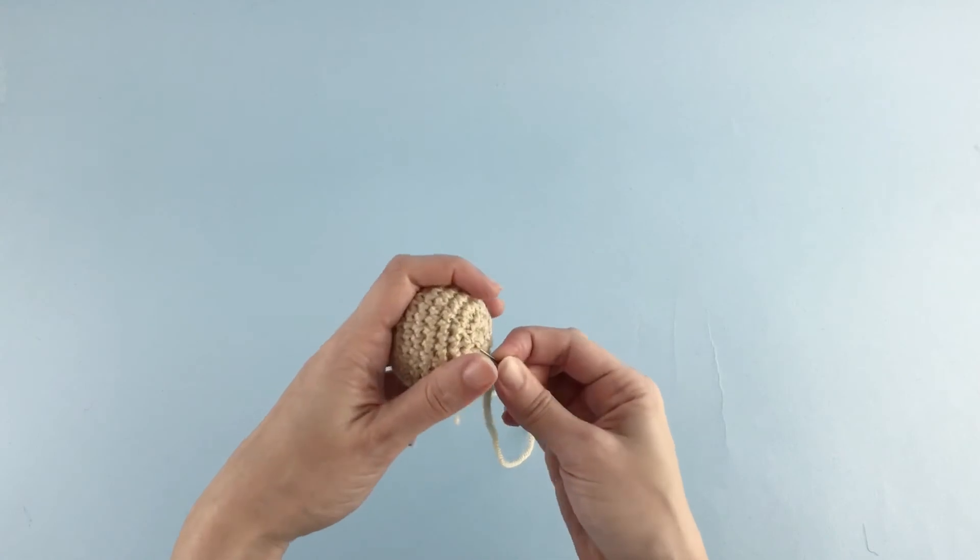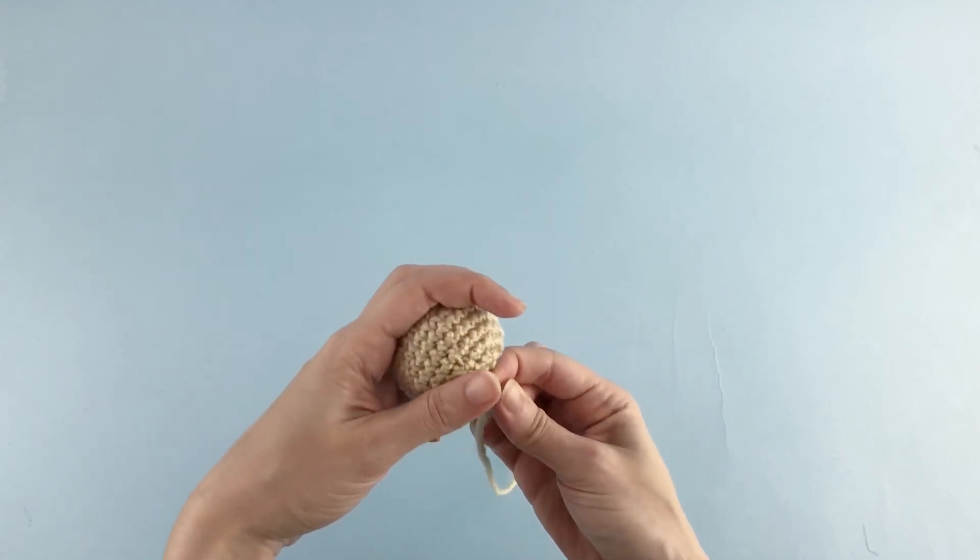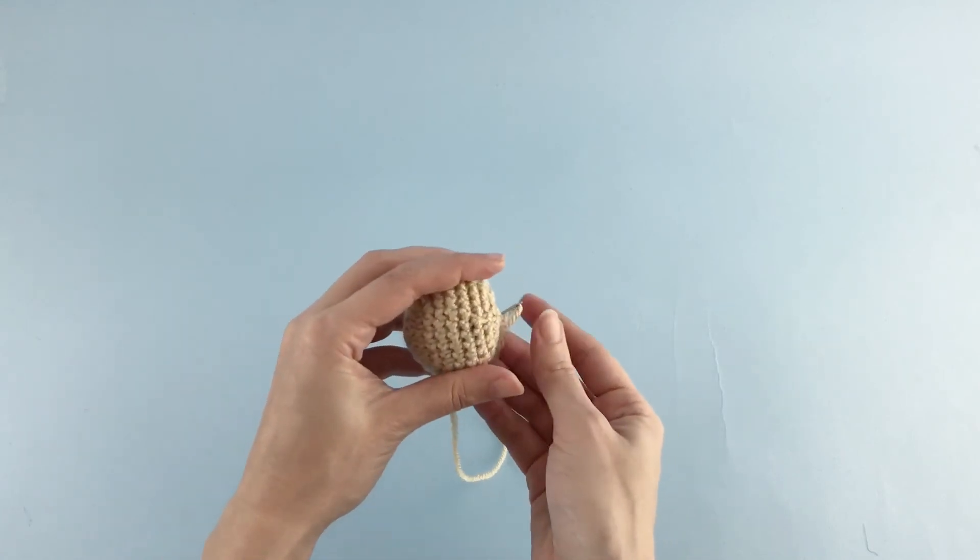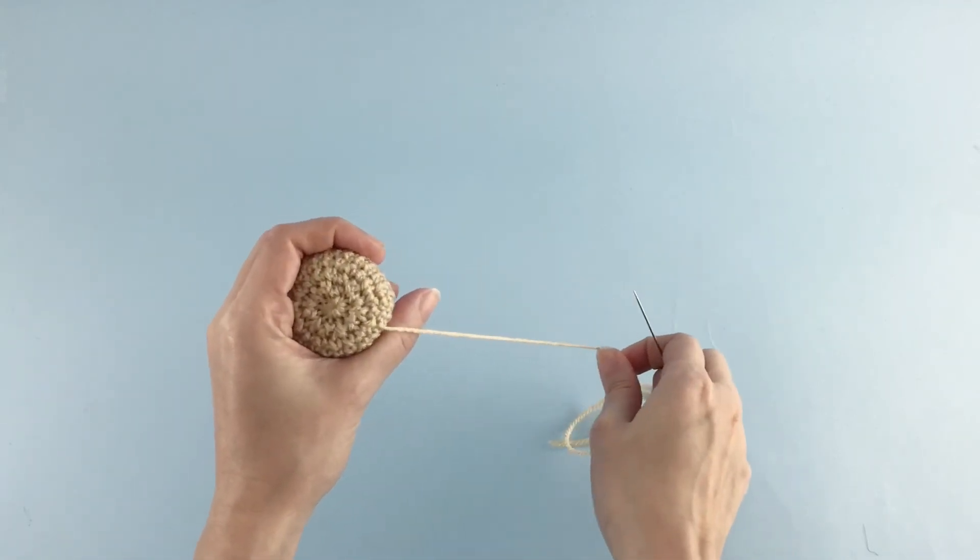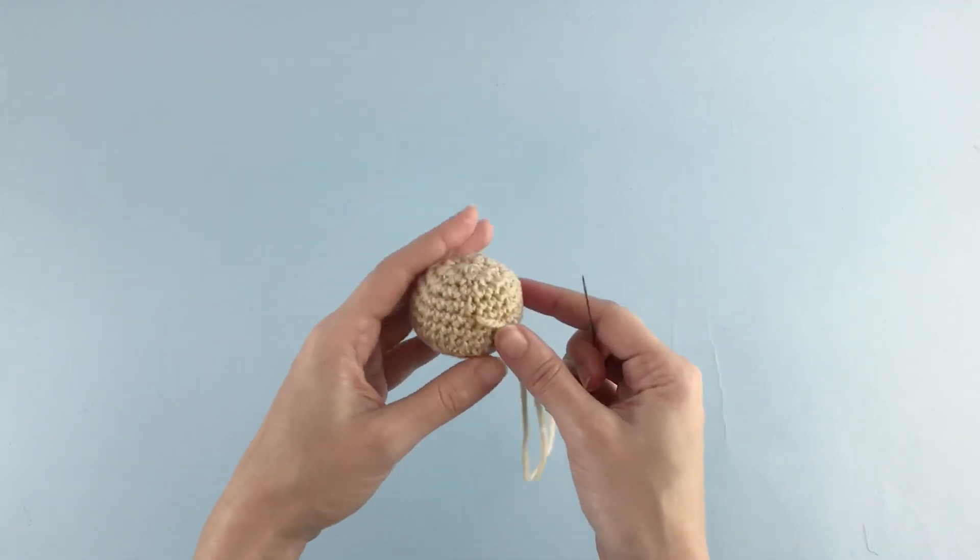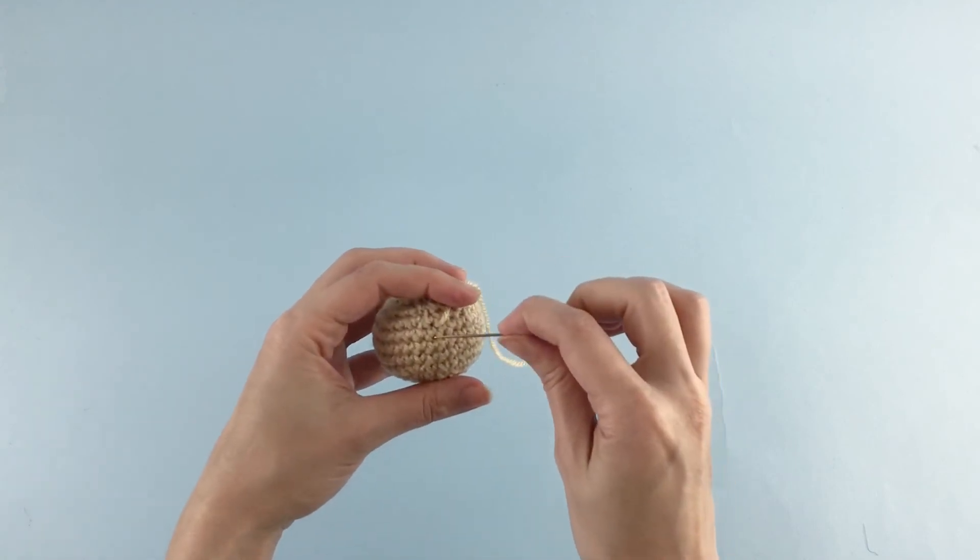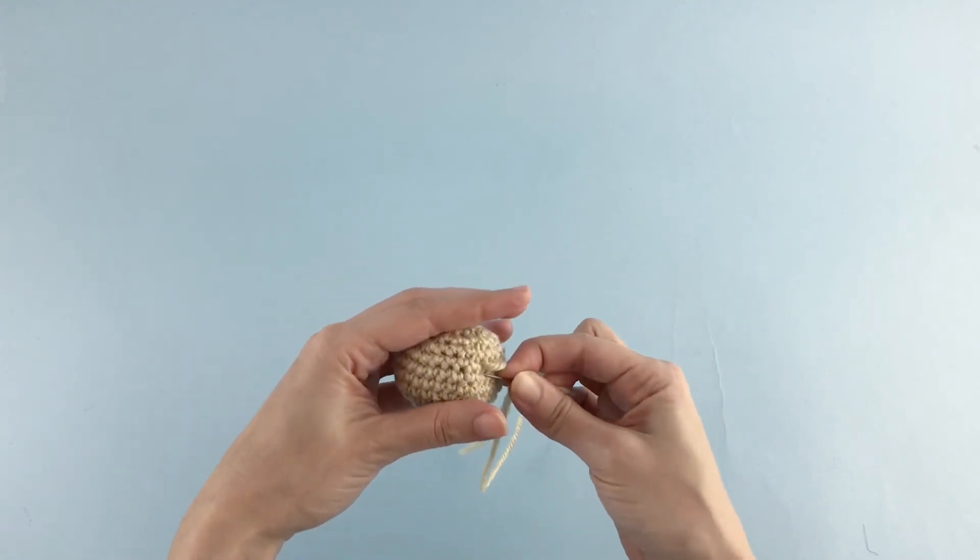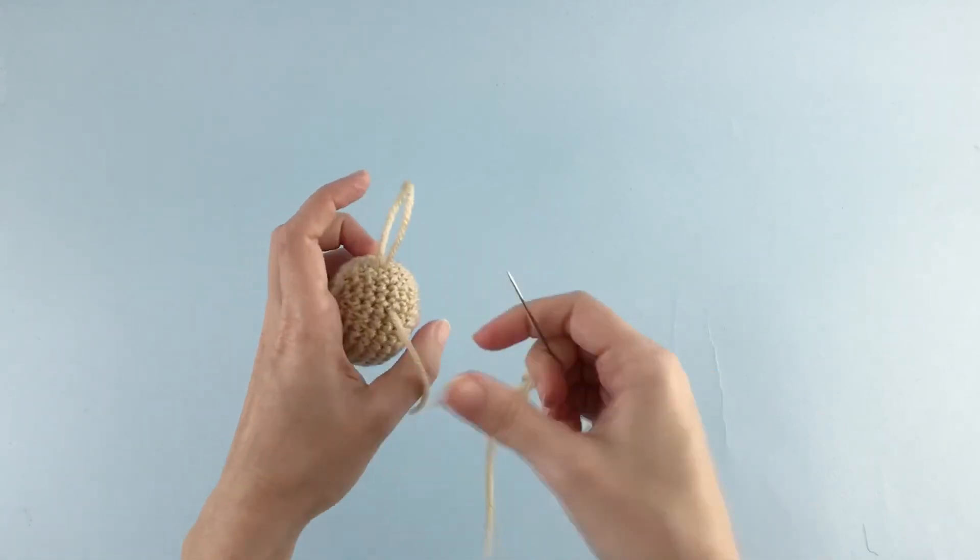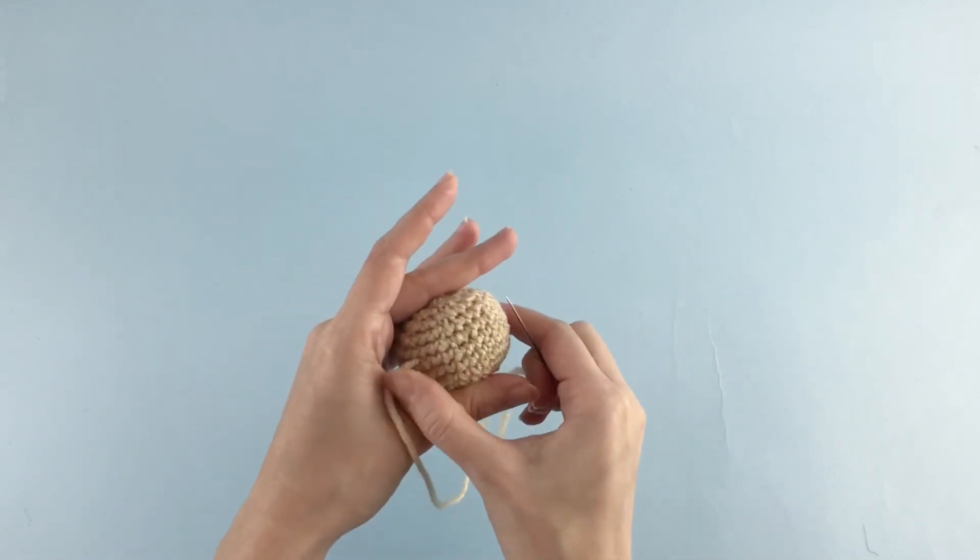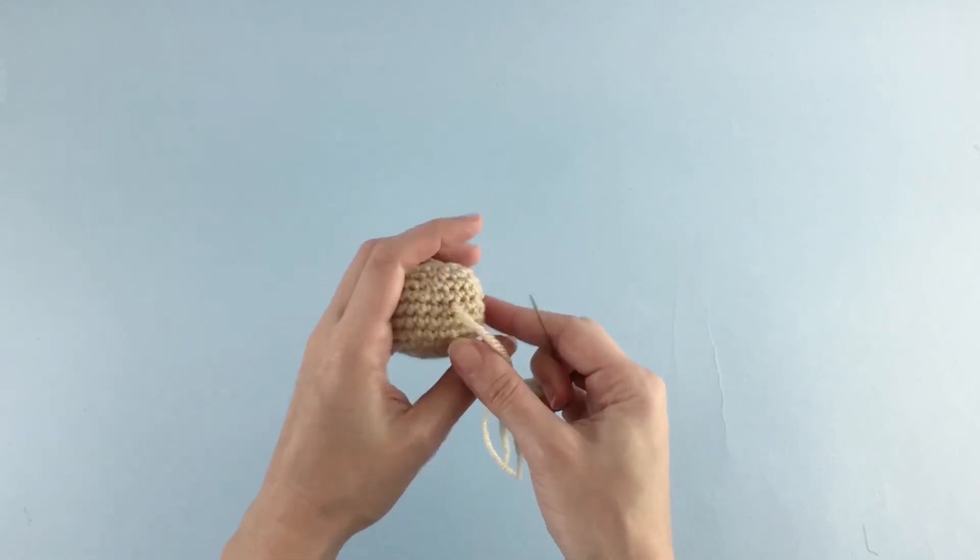Now you insert the needle on the central part and somewhere out there in the middle of some stitches, pull the yarn and to fasten off and to make it secure just do it a couple of more times. You see it's invisible, you cannot see the stitch there.